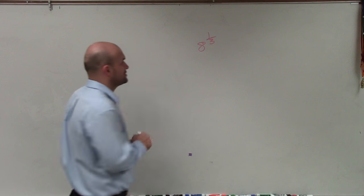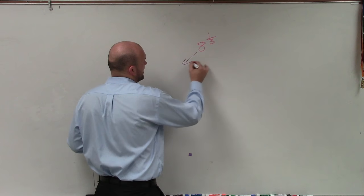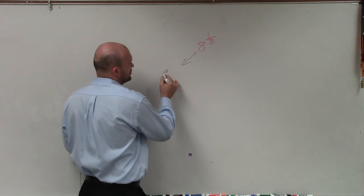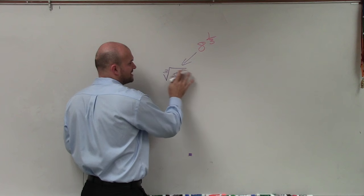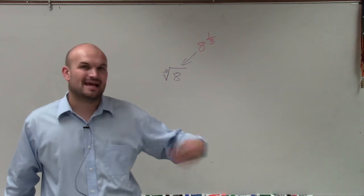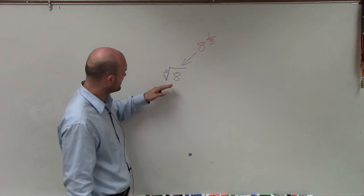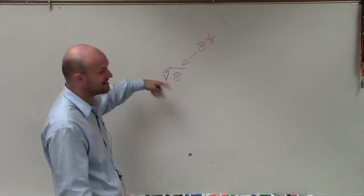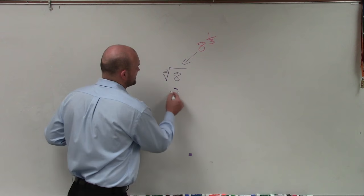So a lot of times, it's very easy just to rewrite it as a radical, as the cube root of 8 to the first power, which is just 8. And remember, cube root is saying, what number multiplied by itself three times is going to give us 8, which we can see the answer is 2.